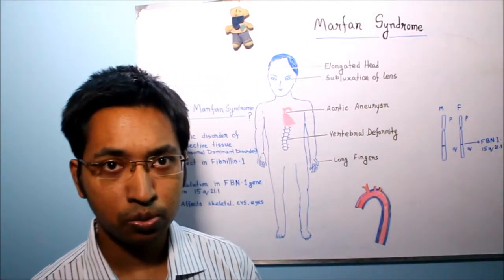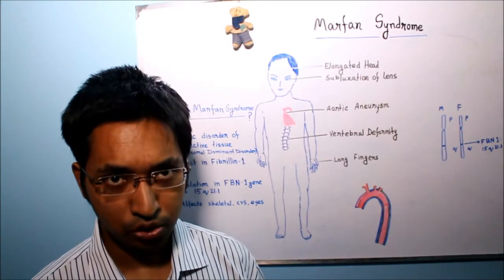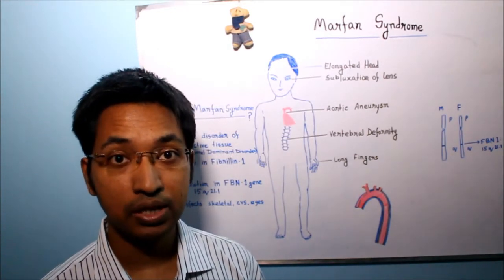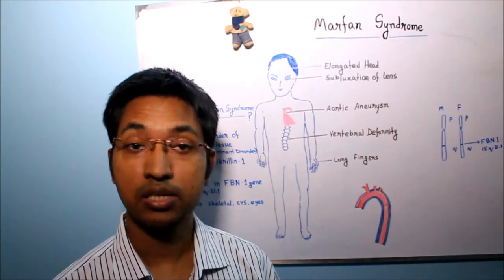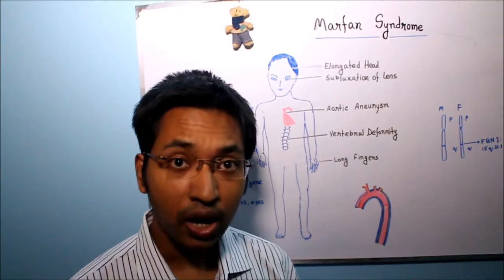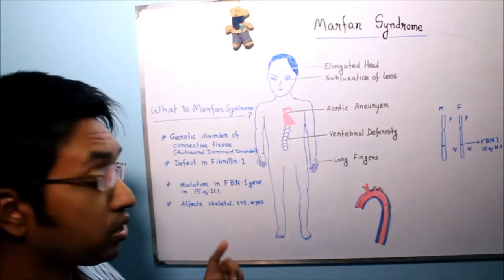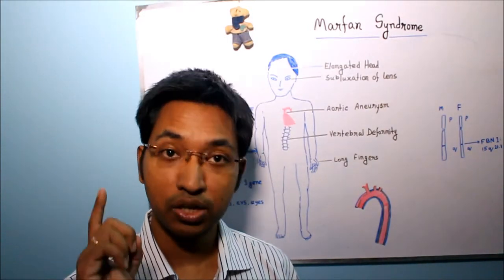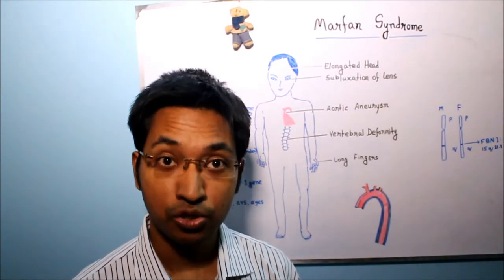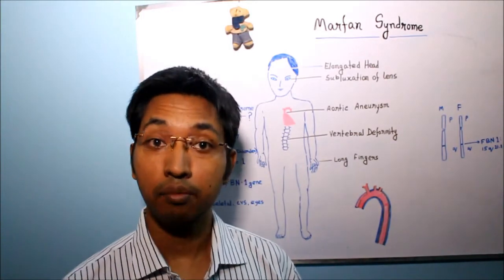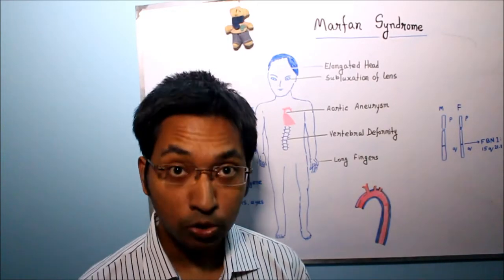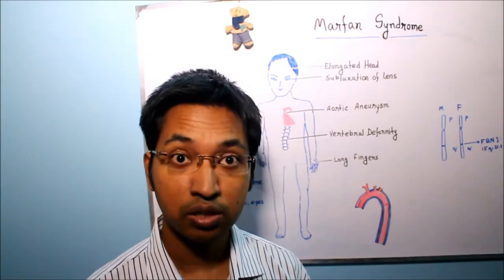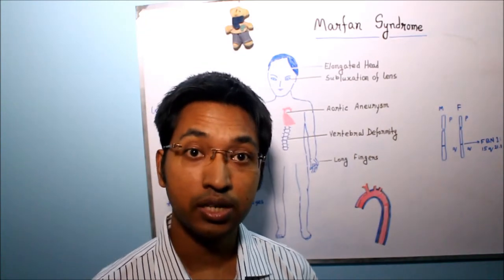Now you may ask: we know Marfan syndrome is a disorder of connective tissue caused by a defect in fibrillin-1 due to mutation in FBN1 gene — but why does this disease mainly affect the skeletal system, cardiovascular system, and eyes? The answer is the distribution of microfibrils. Although microfibrils are seen throughout our body, they are particularly abundant in the aorta, in the ligaments, and in the ciliary zonules that suspend the lens of our eyes. So whenever there is impaired microfibril production, those organs are the first to get affected.